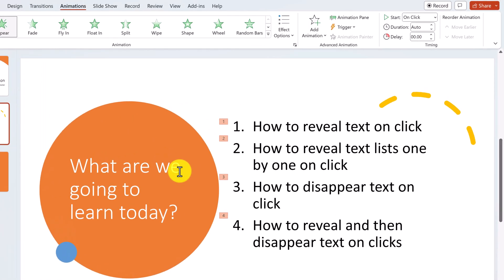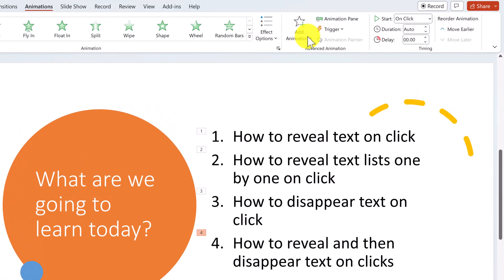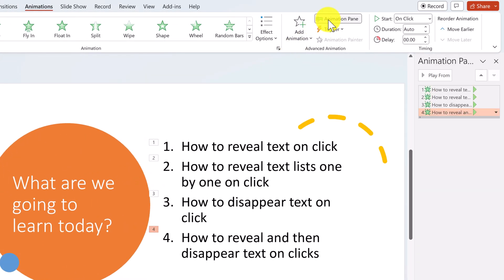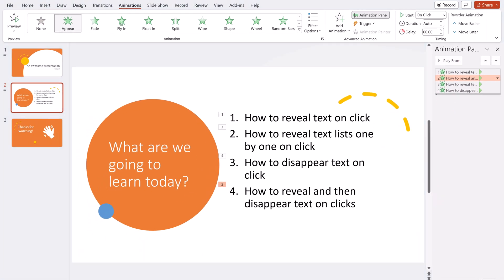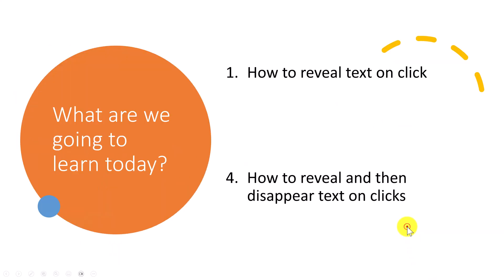But what if you don't want this order? Maybe you want item 4 to appear after item 1, for example. To do this, select the text box and open up the Animation Pane. Here you can change the order of the animations by selecting the item and either clicking and dragging it up and down, or by using the up and down buttons. Let's preview what this looks like. Not bad.